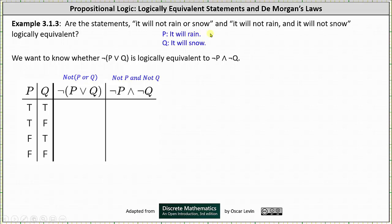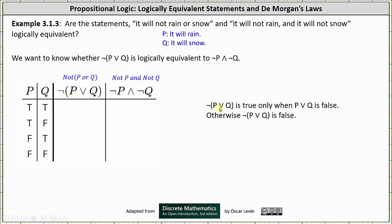Let p be the statement 'it will rain' and q be the statement 'it will snow.' We want to know whether the negation of (p or q) is logically equivalent to the negation of p and the negation of q. The first two columns of the truth table list all possible combinations of true and false for p and q. Now let's consider the negation of (p or q): it is true only when p or q is false, which occurs when p is false and q is false. In the fourth row p is false and q is false, so the negation of (p or q) is true; everywhere else it is false, giving us the column: false, false, false, true.